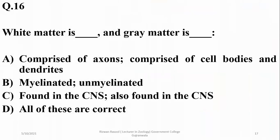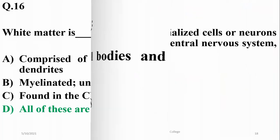White matter is the myelinated part and gray matter is the unmyelinated part. White matter is composed of axons, while gray matter is comprised of cell bodies and dendrites. Both are found in the CNS. The other options are also partially right, so delta is the correct answer.